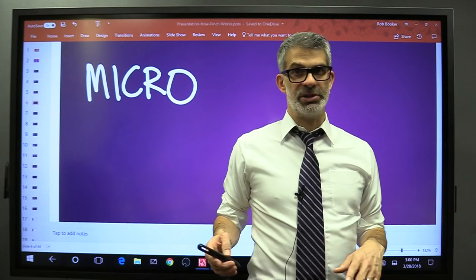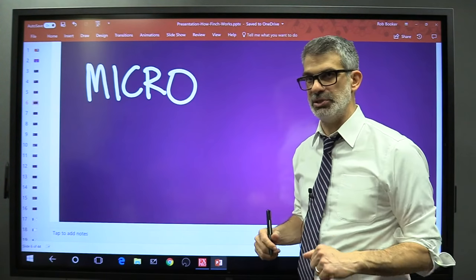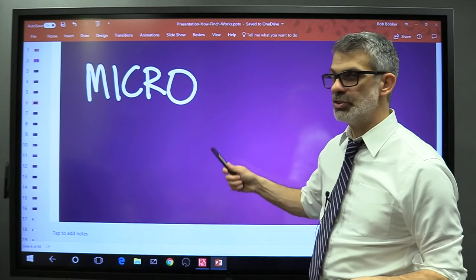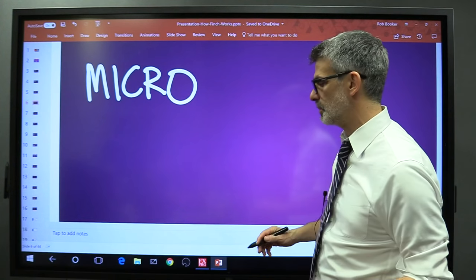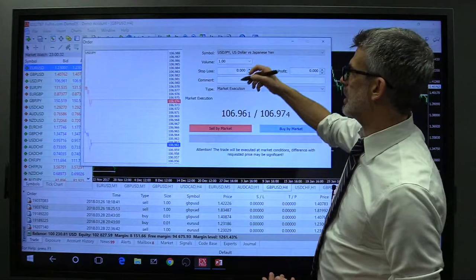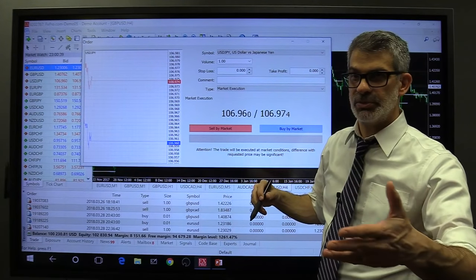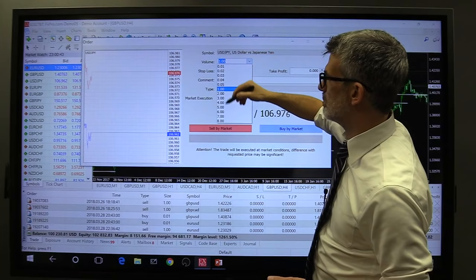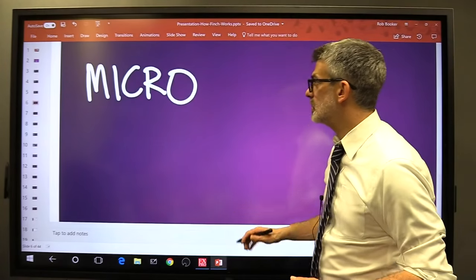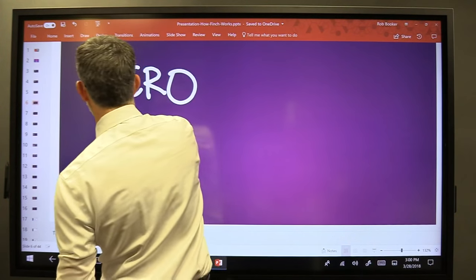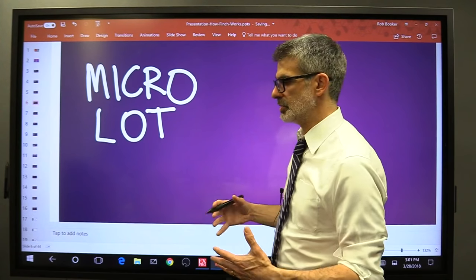In the world of currency trading, there are three different primary trade sizes, and this applies to 99% of all of you that are gonna be doing trading. The first trade size is the smallest, and it's called a micro lot. This is what we use when we first start trading, and it's the smallest trade size possible.